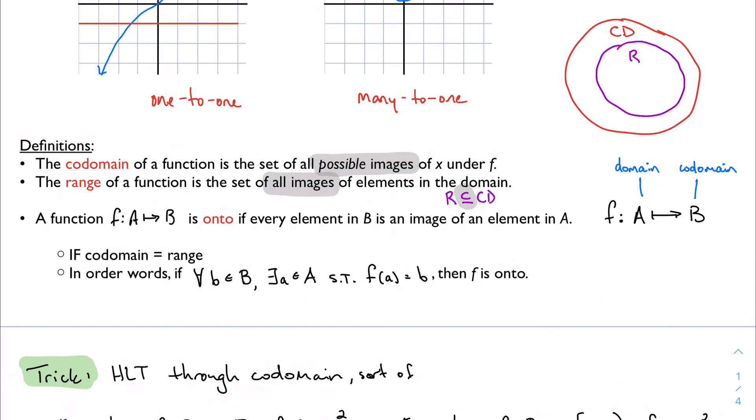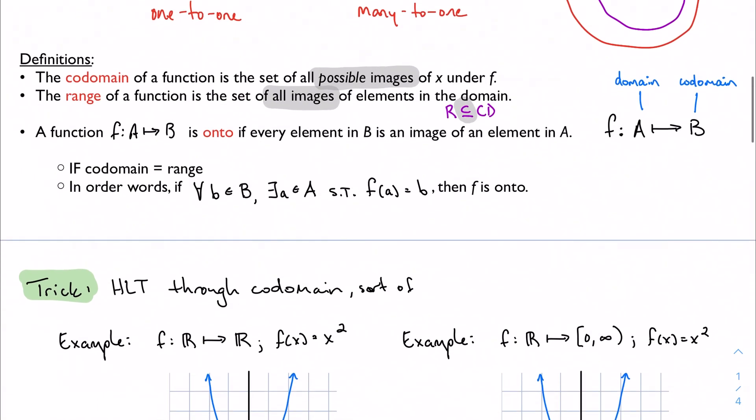Now we get to onto, and onto can be a little bit confusing to read, but it's more intuitive than it sounds. A function is onto if every element in B, in the codomain, is an image of an element in A, the domain. So if every single element in my codomain has a match from some element in A, then I have an onto function.